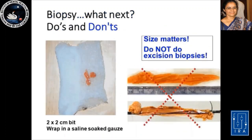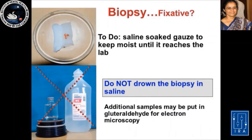The do's and don'ts when you do a muscle biopsy — that's probably the most important message I would like to drive home. The first is that size matters. Just a 2 by 2 centimeter piece is more than sufficient; we don't need large biopsies almost like excision biopsies. Once you get the tissue out, wrap it up in a saline-soaked gauze. The objective is just to keep the biopsy fresh until it reaches the lab, so please do not drown the biopsy in excess saline, because the excess saline causes artifacts which can completely hinder interpretation.